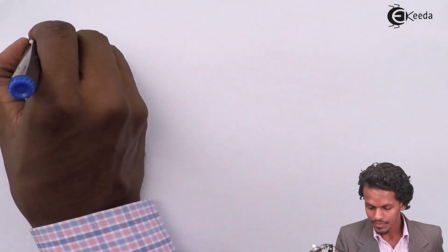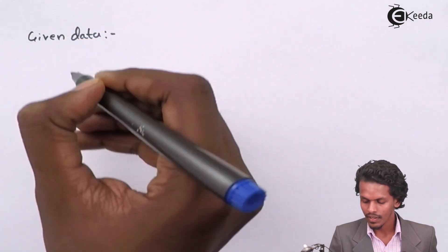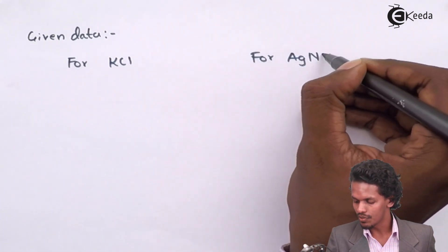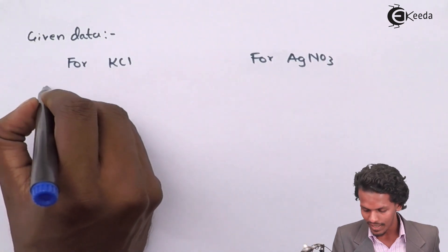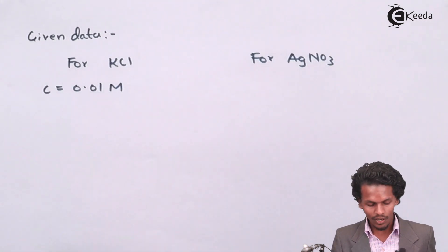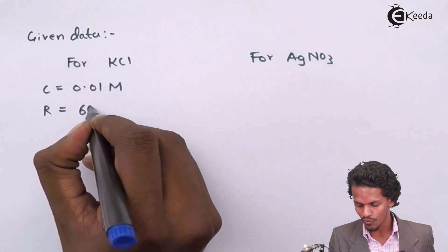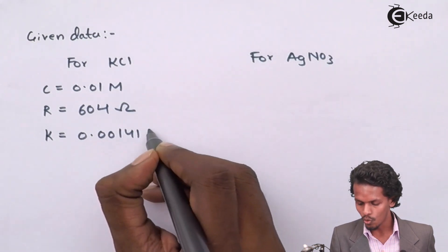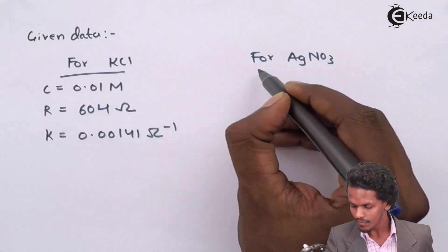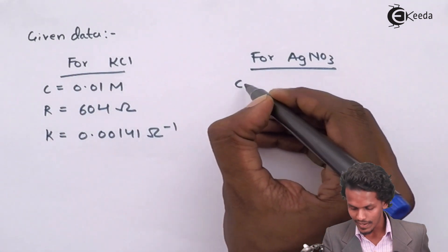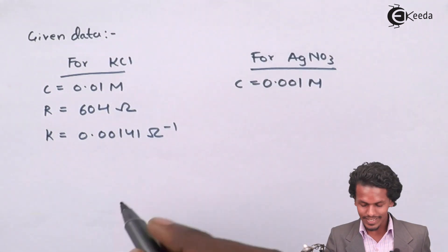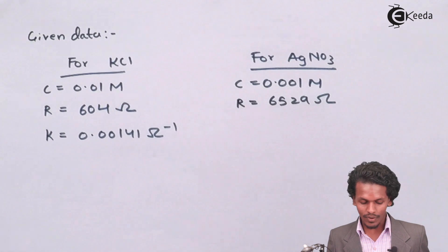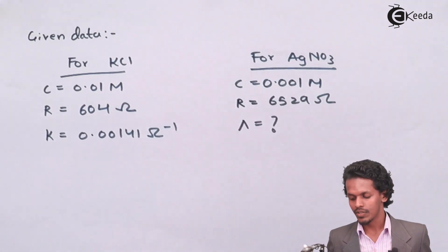So the given data has been separated: for KCl solution, the concentration is 0.01 molar, the resistance given is 604 ohms, and the conductivity given is 0.00141 ohm inverse. For AgNO3, the concentration is 0.001 molar, the resistance given is 6529 ohms, and we need to calculate the molar conductivity.